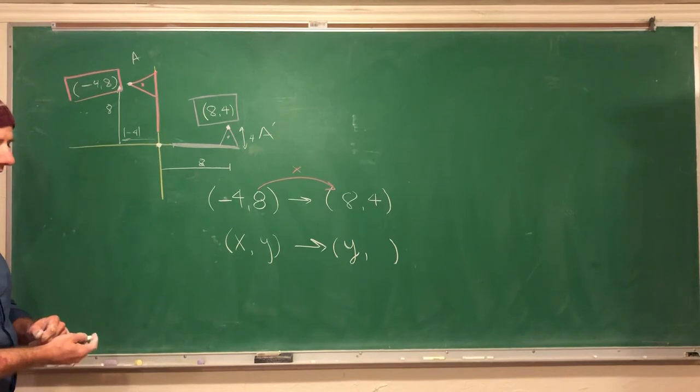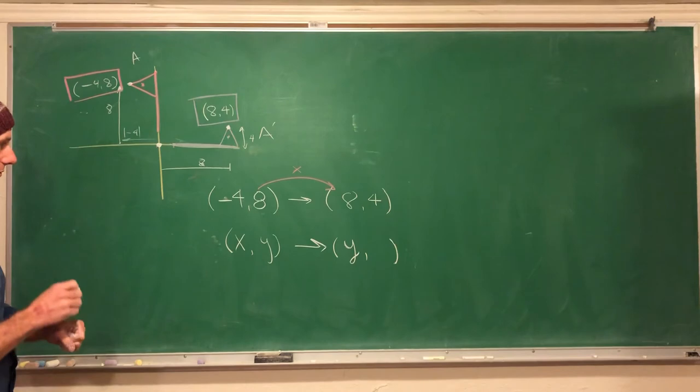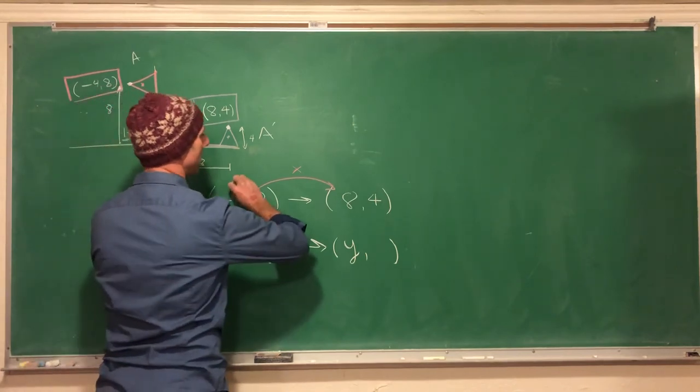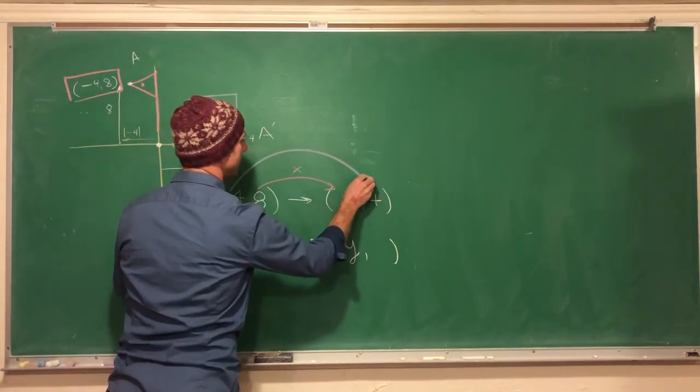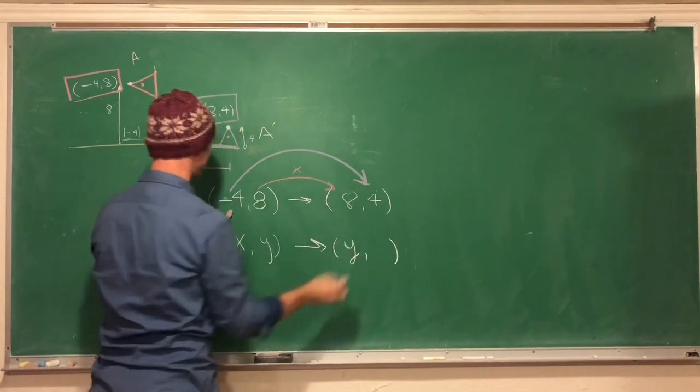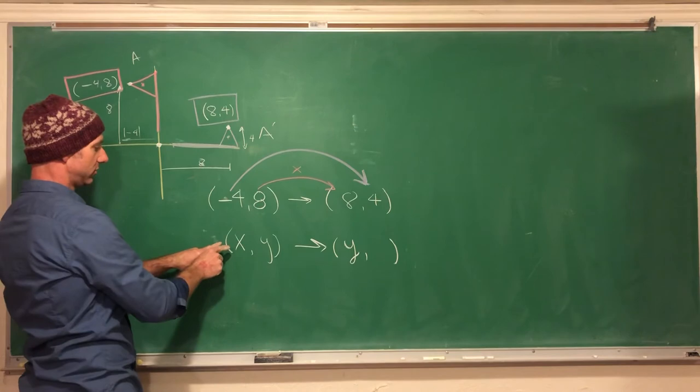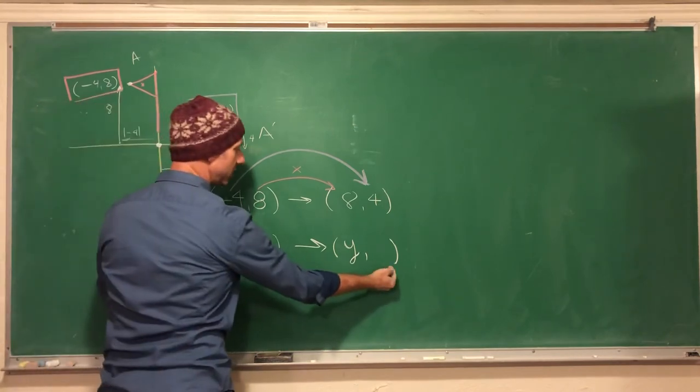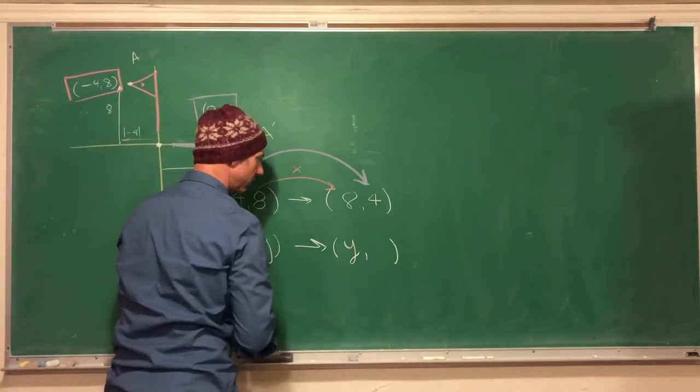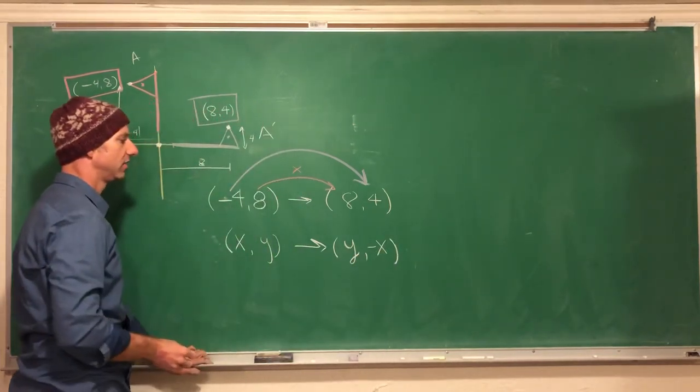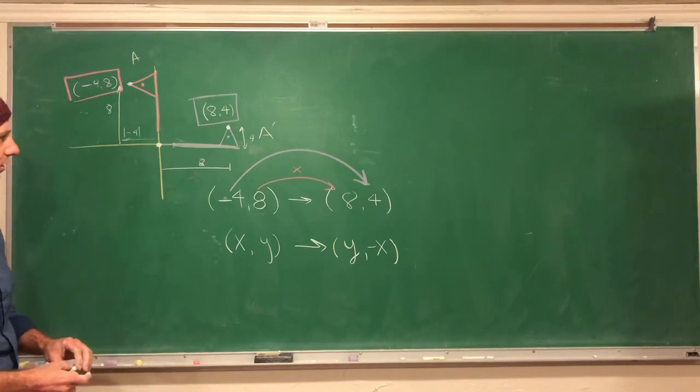And what did my x do? So my x went from here out to there and changed sides. So now my x is out here negative. Y, negative x.